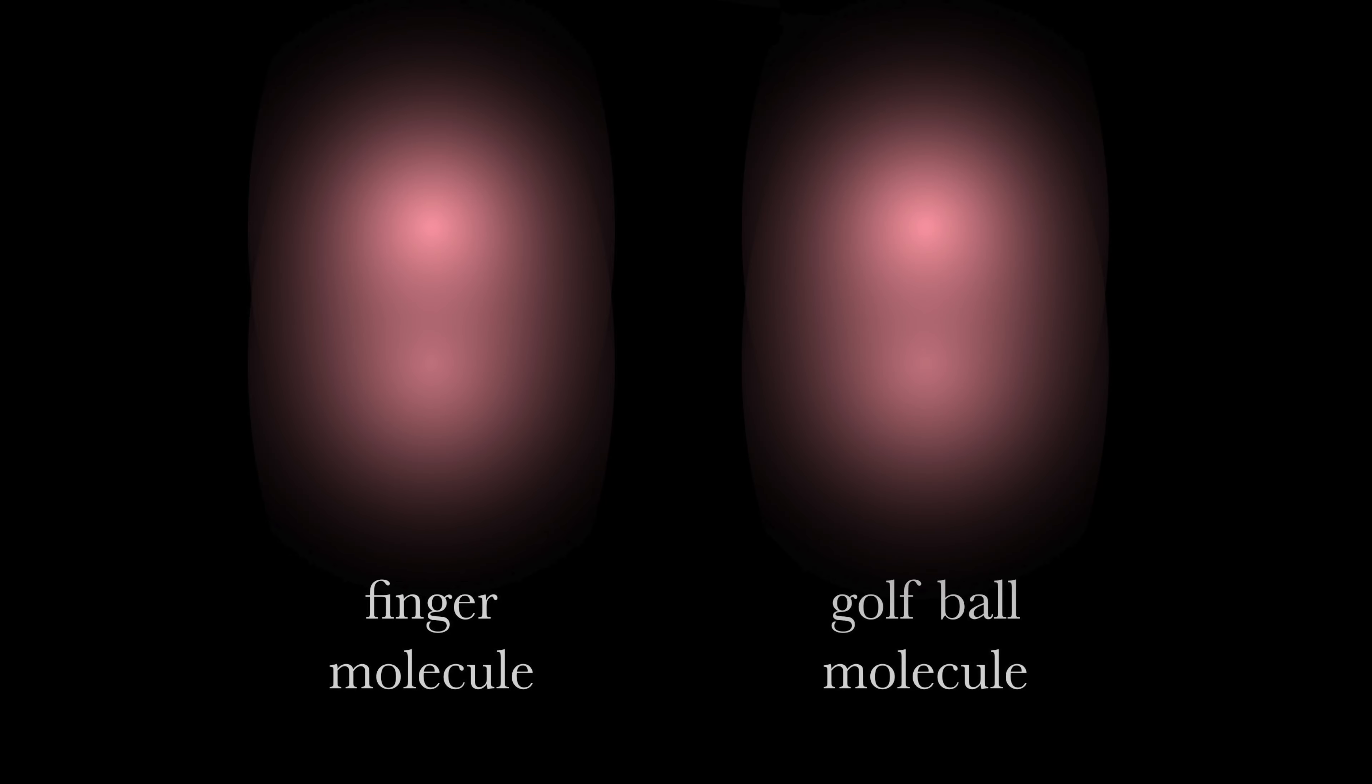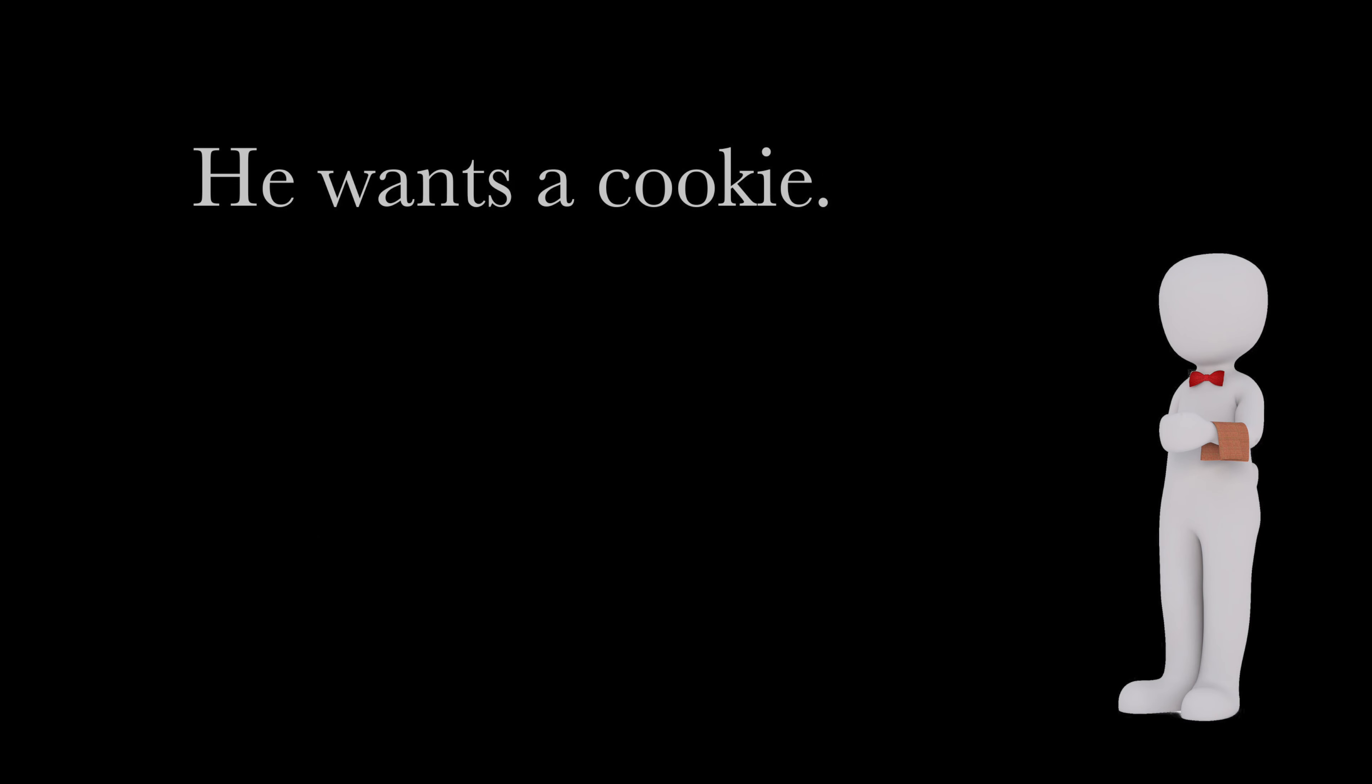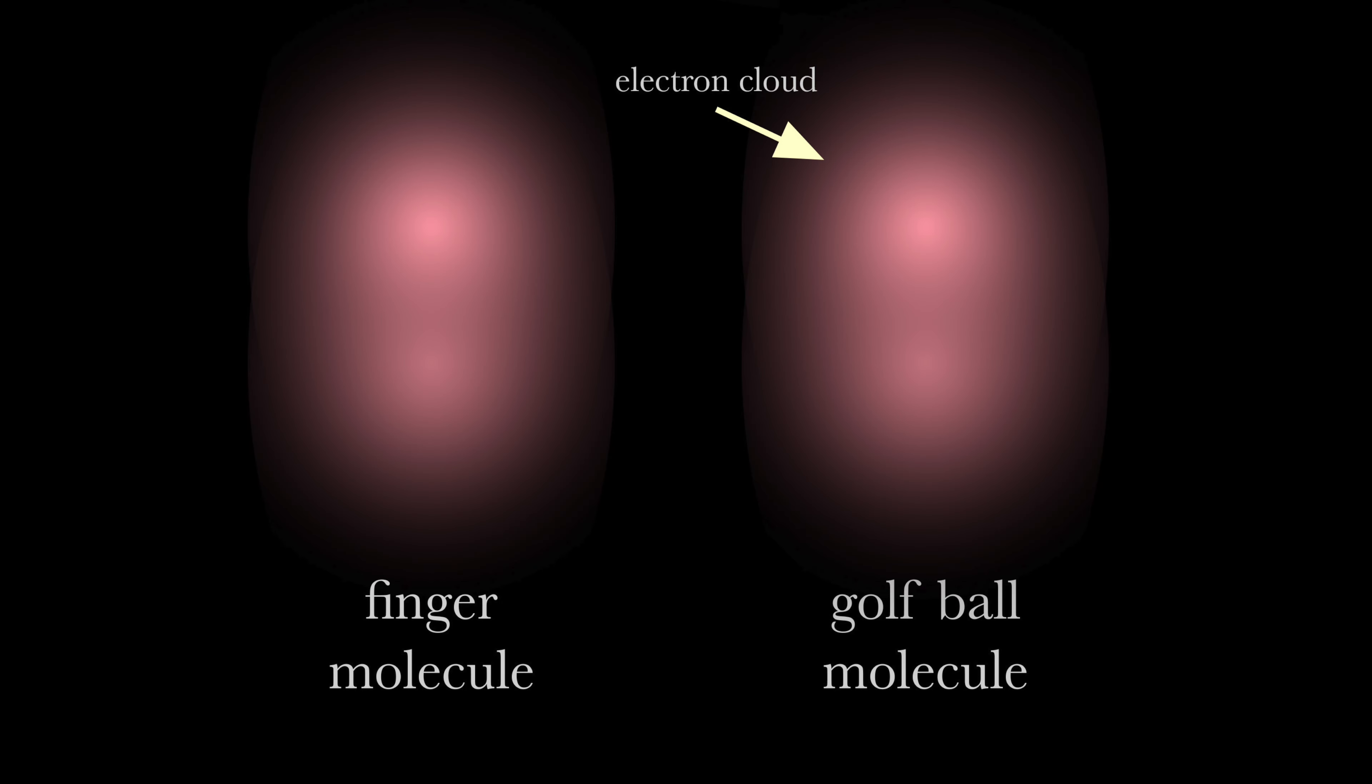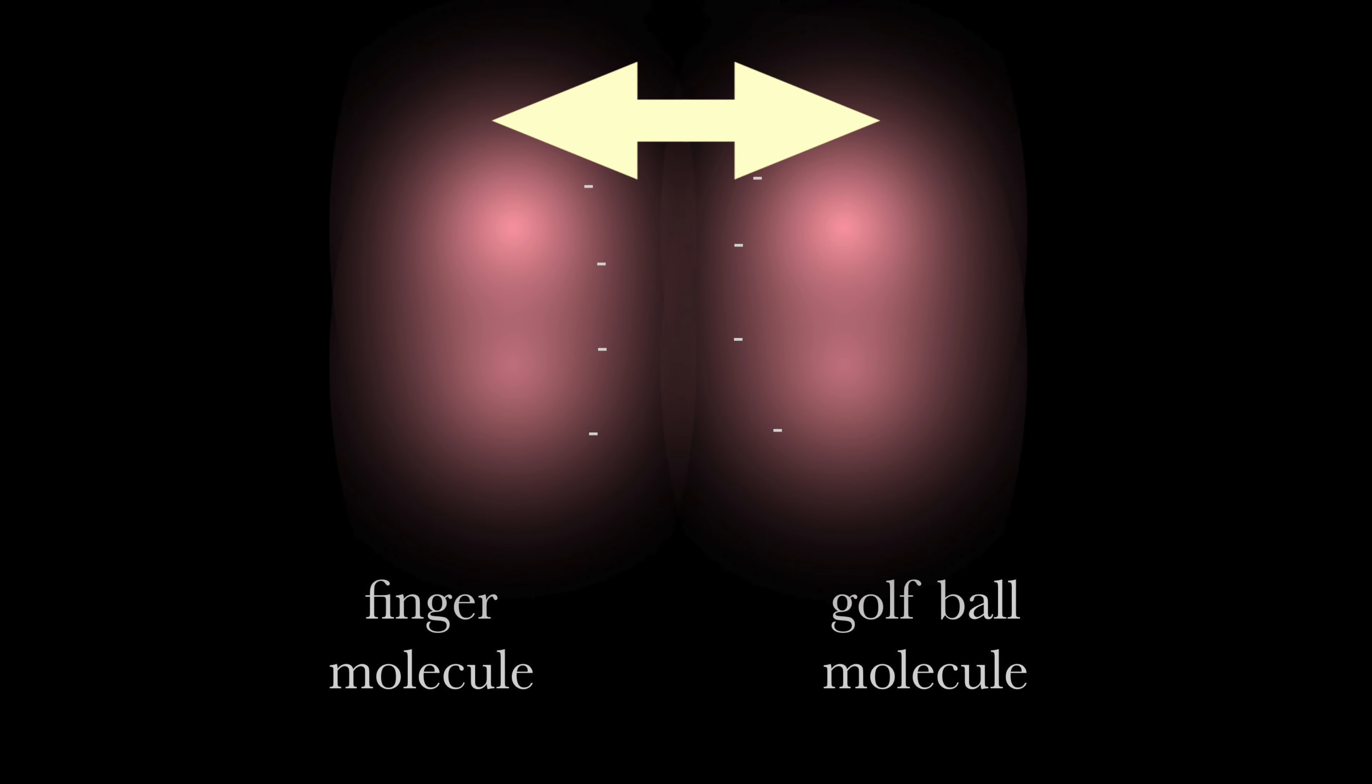Here's one molecule from your finger and another from the golf ball. The electron clouds are represented by the fading color as you move away from the nucleus. The negatively charged electron cloud repels other negatively charged clouds. The more they overlap, the more they repel each other.